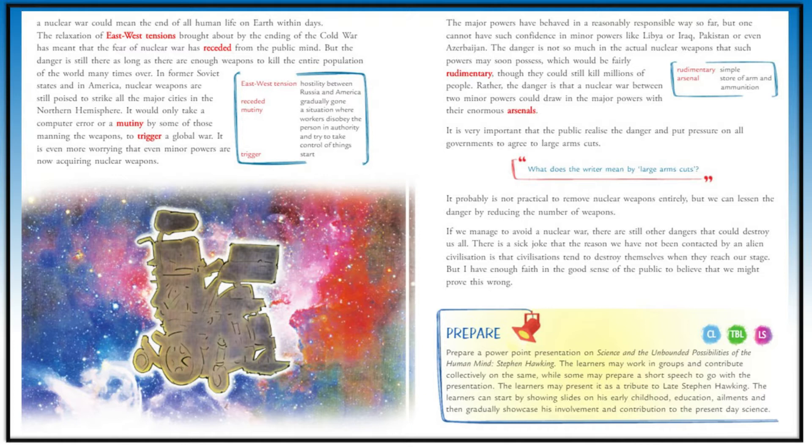The producers of television programs should realize that they have a responsibility to educate the public, not only entertain them. People have to take decisions on science-related issues; the most urgent is about nuclear weapons. There are many other issues like food supply and greenhouse effect, but nuclear war could lead to the end of all human life on earth. The relaxation of east-west tensions after the Cold War reduced fear, but the weapons are still there in the Soviet Union and America, still ready to strike the northern hemisphere.